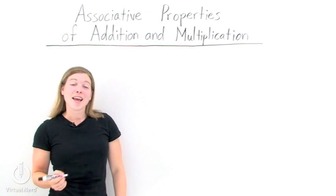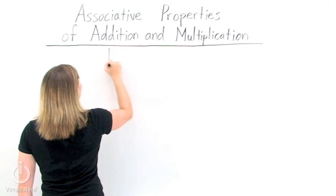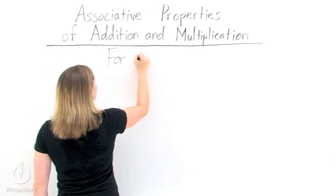The associative property. In math, the associative property is simply a way to regroup terms in an algebraic expression.